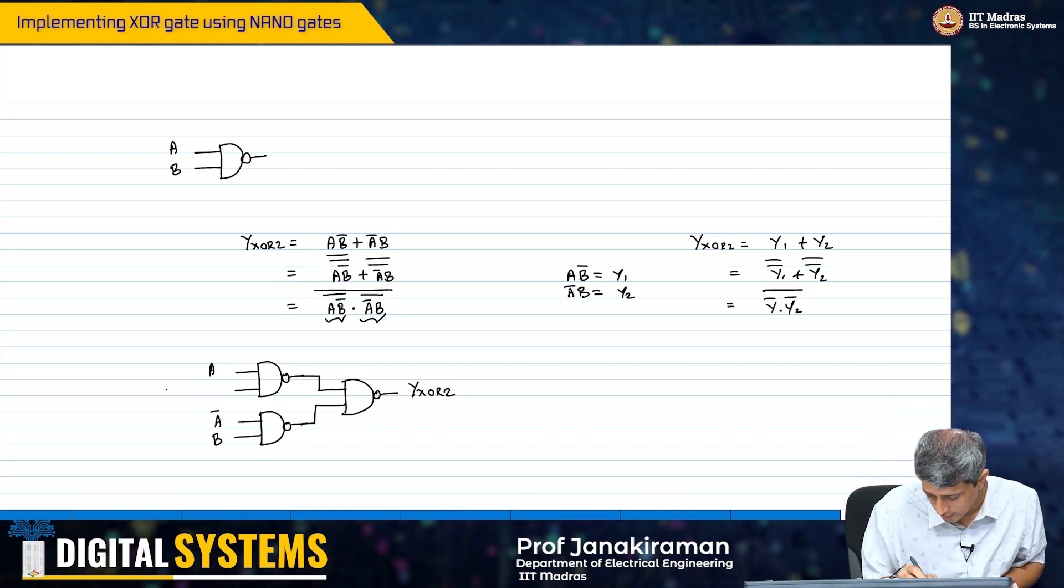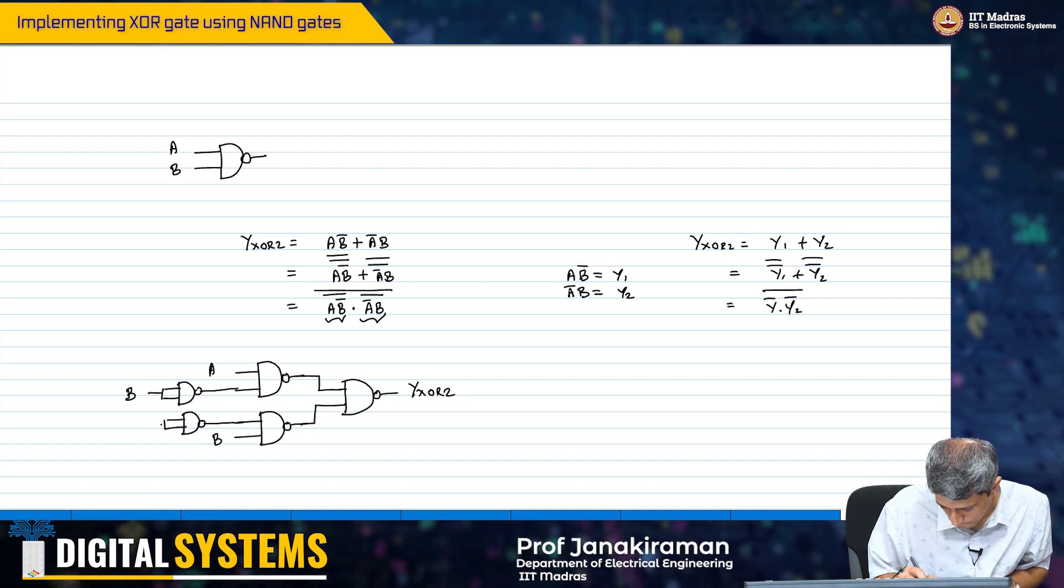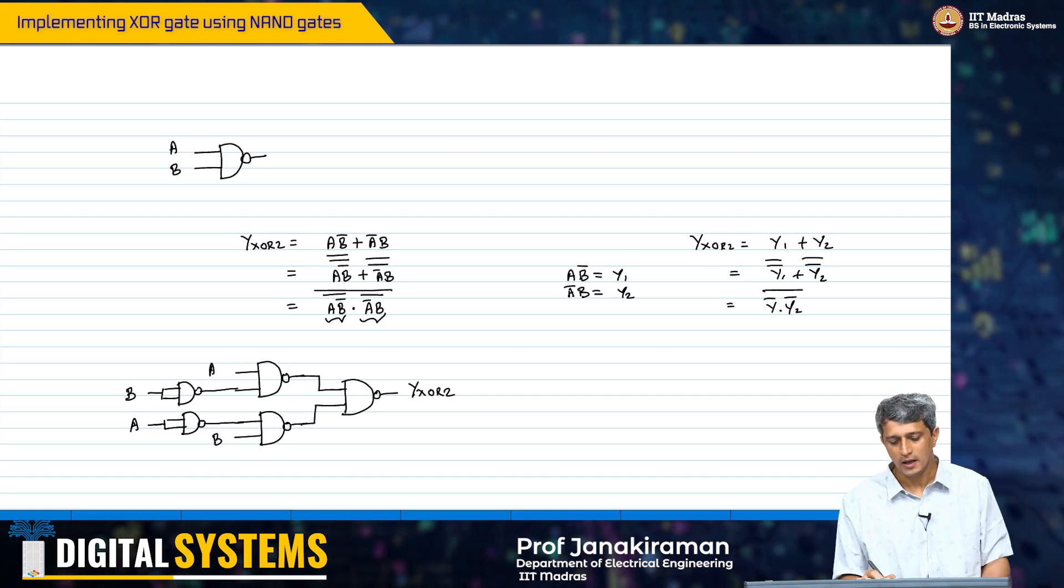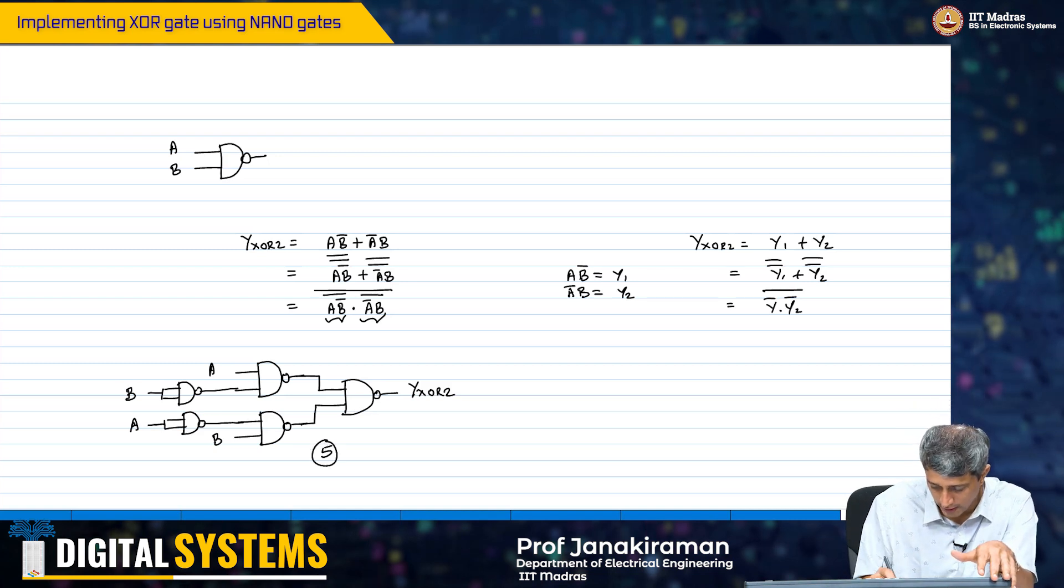That is not entirely true because we need to generate a bar and b bar. Therefore, this needs to be generated using a NAND 2 gate like this. Technically we were able to implement this XOR 2 gate using 5 NAND 2 gates. The number of NAND 2 gates is 5.